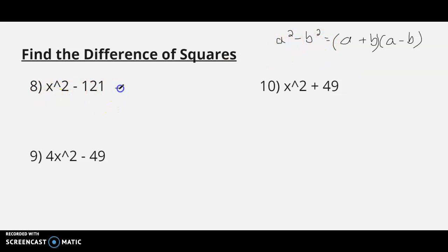Look at number 8 here. The square root of x squared is x, and the square root of 121 is 11. So we've got x and 11 is our A and B. One's plus, one's minus. Put them in parentheses, and that's the factored form.